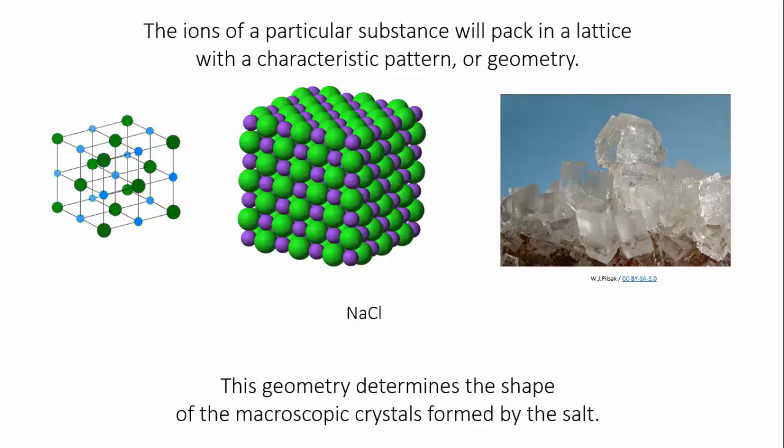Because different ions are different shapes and sizes, there isn't a single best way for all ions to pack into a lattice. Each ionic substance has a characteristic way of packing. As more and more ions are added to the lattice, the crystals eventually become macroscopic, and the shape of the crystal reflects the geometry in which the ions packed.